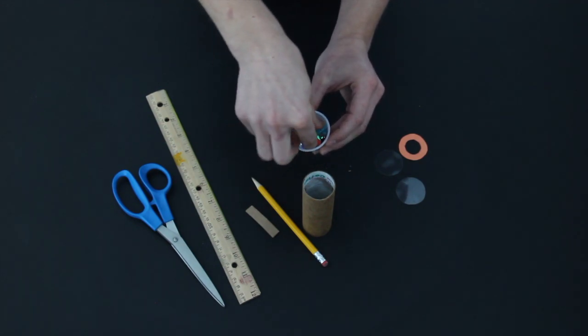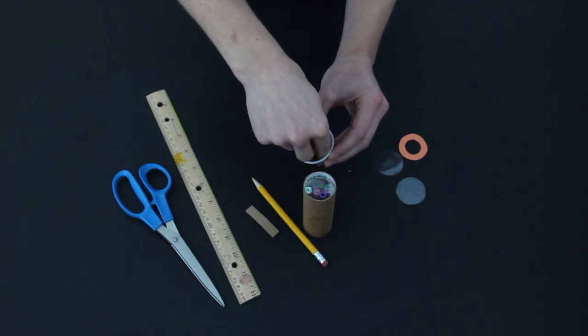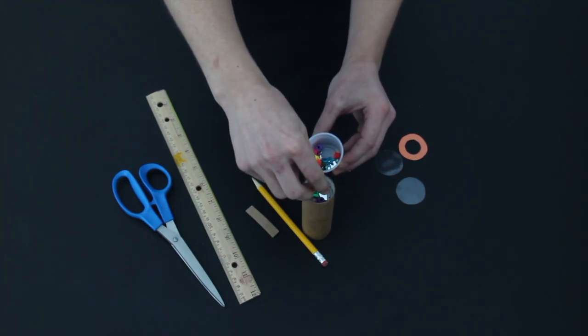Here's the fun part. What stuff do you want inside your kaleidoscope? We're going to use beads today. Consider using sequins, colored glass beads, anything that's colorful.